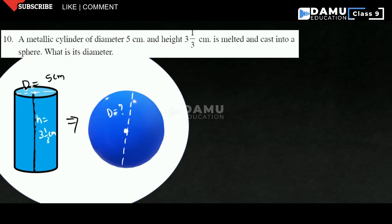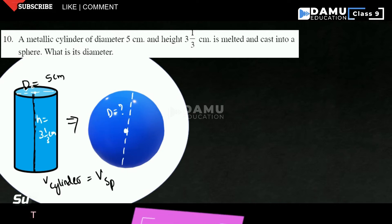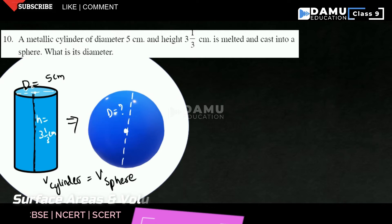First, before going to that, the volume of the cylinder will be equal to the volume of the sphere. Why? Because there is no change in metal — there is no change in the material. So the quantity of material is the same.